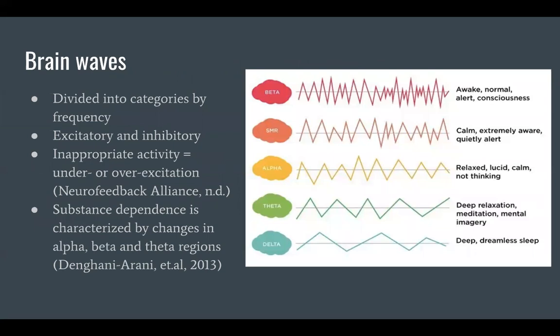Next, I'm going to talk a little bit about brainwaves to help understand the science behind neurofeedback. Brainwaves are divided into alpha, delta, theta, SMR, and beta waves based on their frequency.